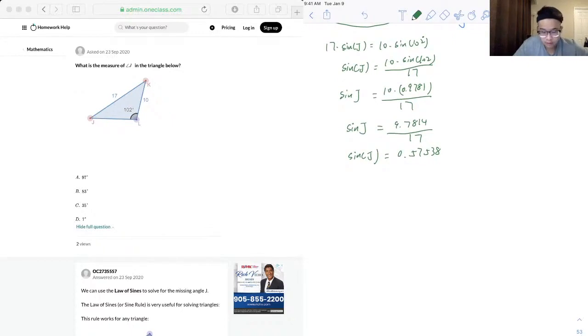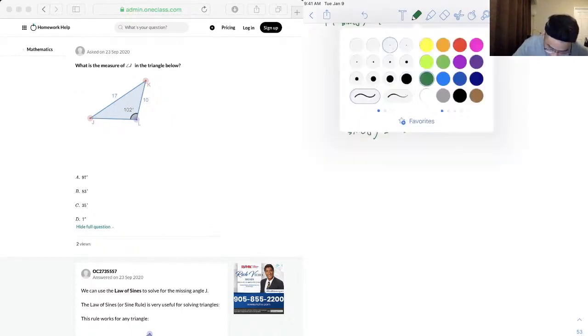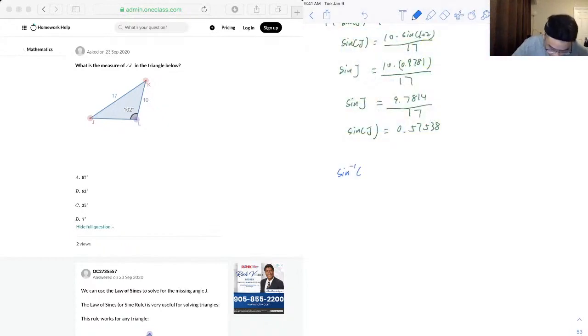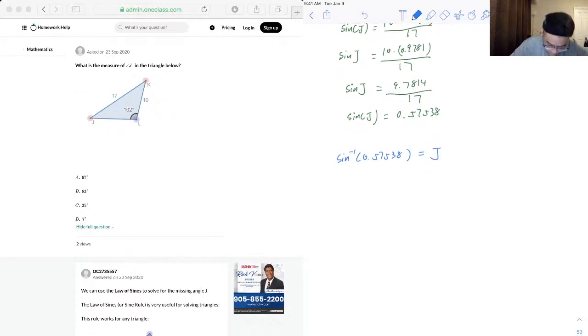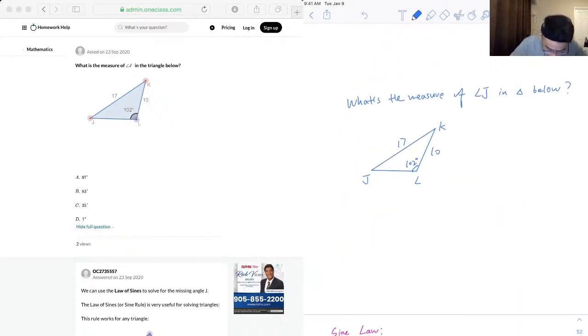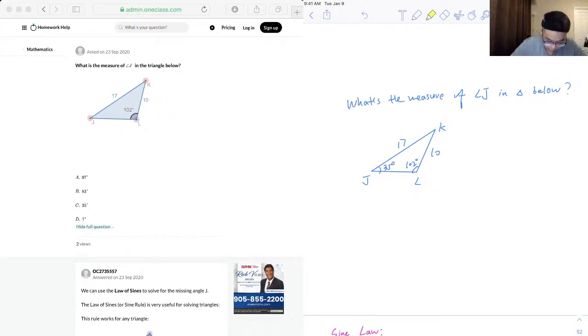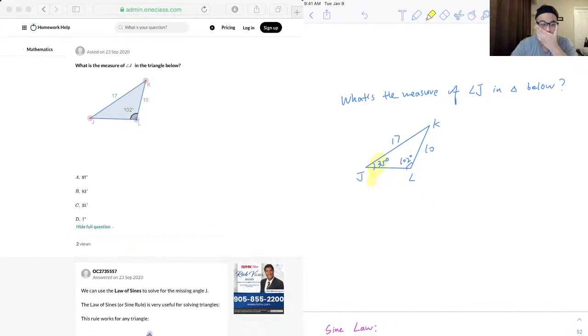And we use the inverse sine on our calculator, it's just gonna be something like this: so sine inverse 0.57538 is equal to J. And we will get J is approximately, it is 35.1263 which is approximately 35 degrees. And that is our answer. So 35, our answer should be C. We'll just write it on this.